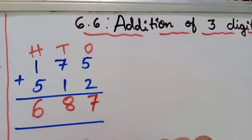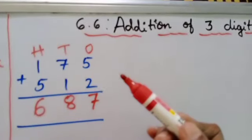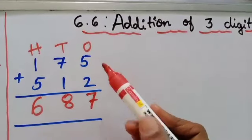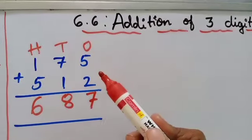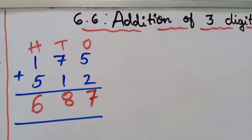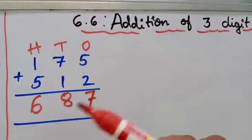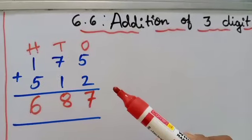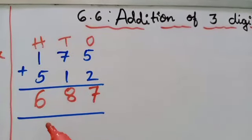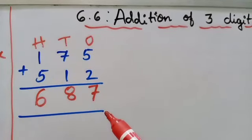When the result crosses 10, or becomes a 2-digit number, then we get a carry over. So it is very simple — you only have to concentrate on the 3-digit number, that is the hundreds place. So the total answer we got is 687.